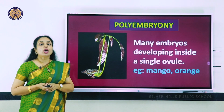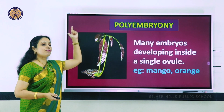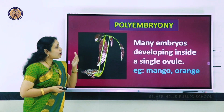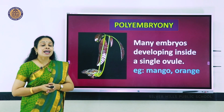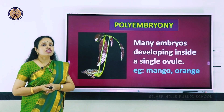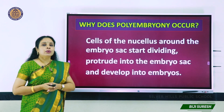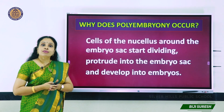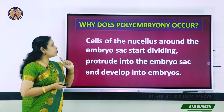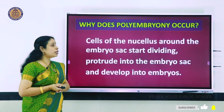Here you see a phenomenon called polyembryony. You can see the seed of a mango from which two or three plants are coming up instead of one. More than one embryo inside a single ovule is called polyembryony. Examples are mango and citrus fruits like orange. This occurs because the nucellar cells around the embryo sac start dividing, protrude into the embryo sac, and develop into embryos.